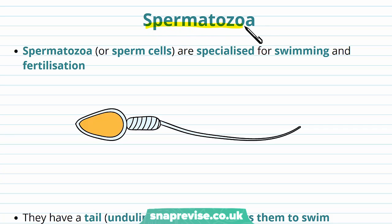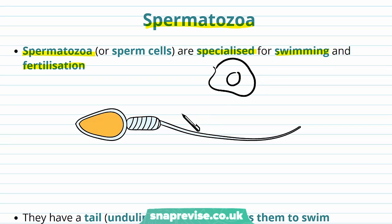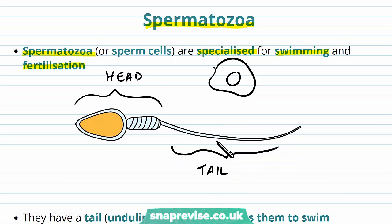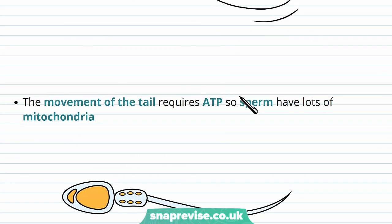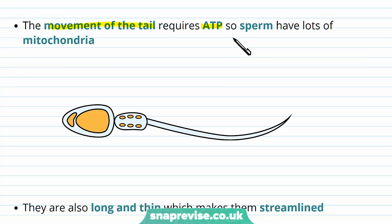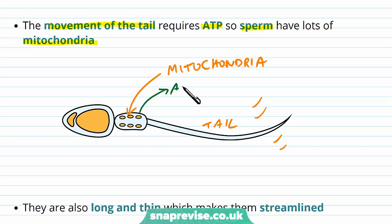Another example of a specialised cell is the spermatozoa, or sperm cell. Spermatozoa are specialised for swimming and for fertilisation. You can see there's a head region and a long thin wiry tail sticking out from the back. The tail is also known as an undulipodium — basically a technical name for a tail — which allows them to swim through the solutions they are ejected into. The movement of the tail is quite energetic and requires ATP input, so sperm have lots of mitochondria in the cytoplasm of the cell to supply that ATP needed for swimming.